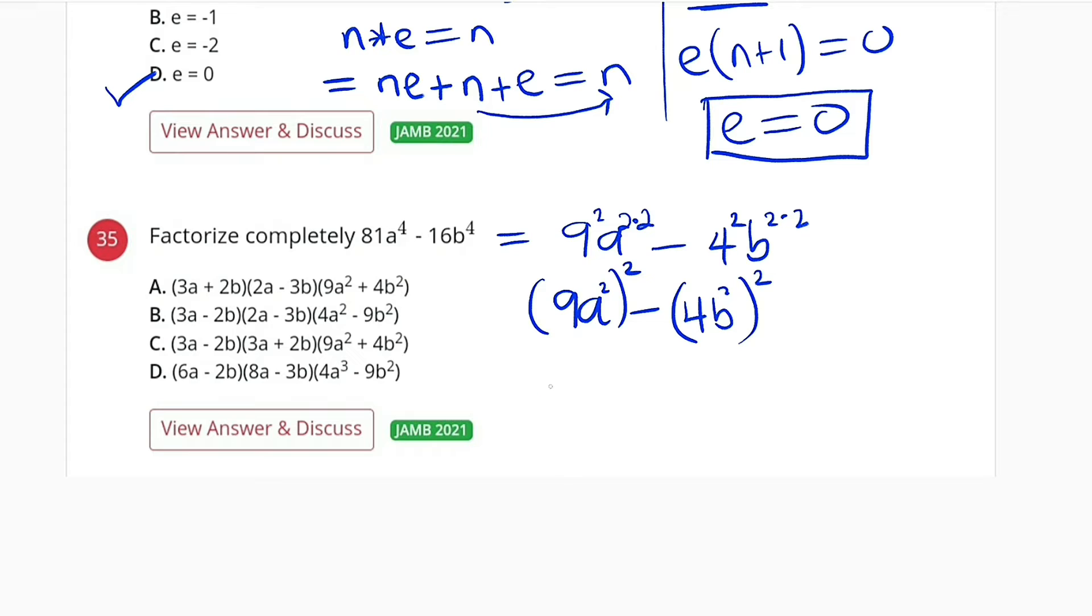This is difference of two squares. I can take the first term 9a squared and subtract the second term 4b squared, then I close, then I will also multiply by 9a squared, then this time around plus.